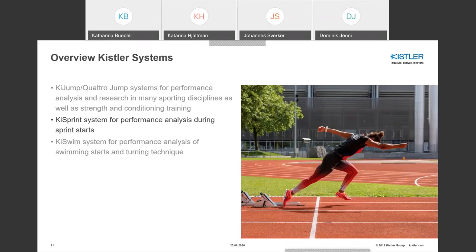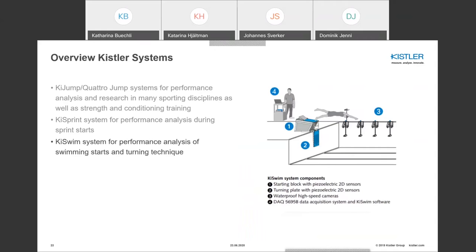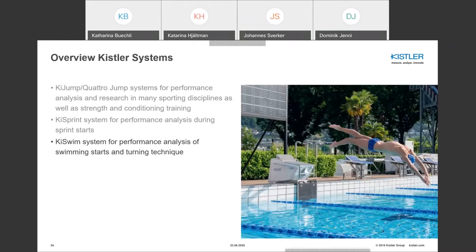The KeySwim system has an instrumented starting block and turning wall, which function like force plates and can be integrated into the Qualisys system. There is also standalone software for daily performance analysis including five cameras measuring velocity of start and turn performance in a calibrated room. Some nice installation pictures from a site in Switzerland illustrate this.